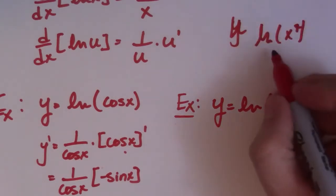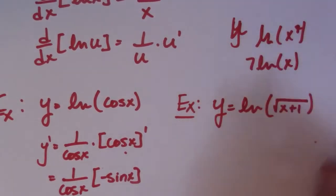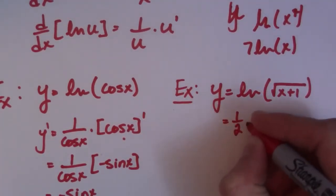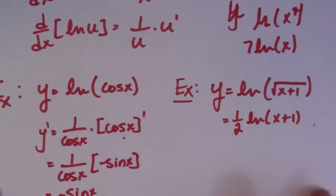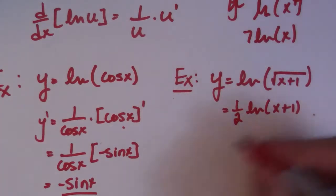So let's say if you had ln x to the 7, that's the same as 7 ln of x. So we can always take that one-half to the outside. And that makes it a much easier derivative. So one-half ln x plus 1. So we don't have to deal with that complicated root scenario. So now we go ahead and take the derivative.